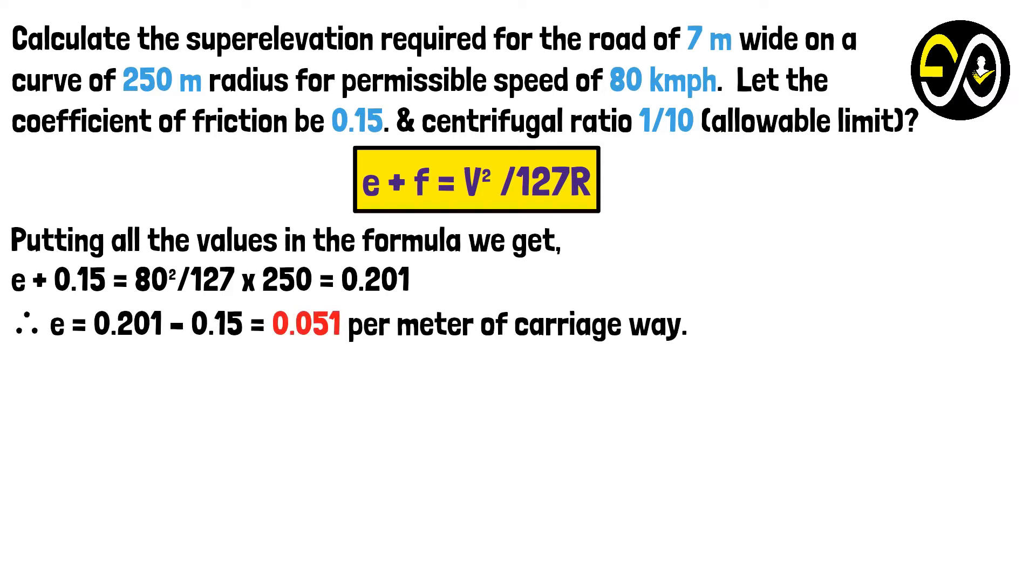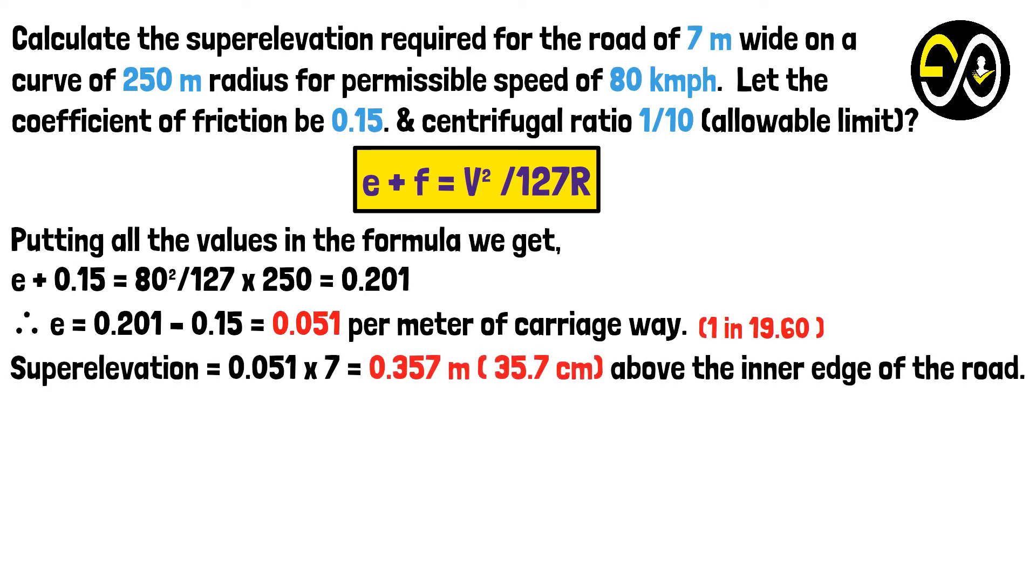Therefore superelevation = 0.201 - 0.15 = 0.051 per meter of carriageway. Superelevation = 0.051 × 7 = 0.357 meters (35.7 cm) above the inner edge of the road.